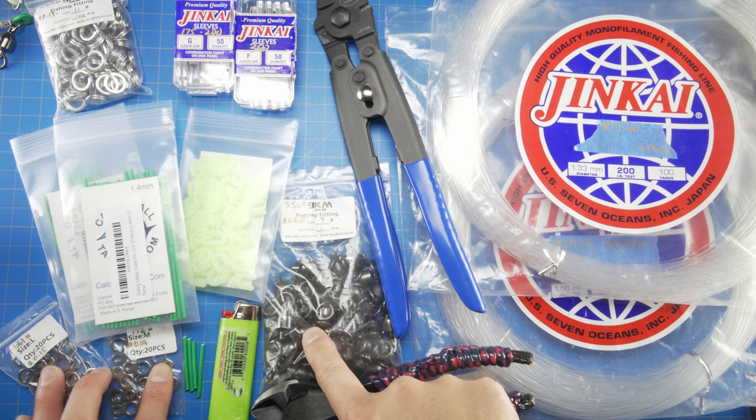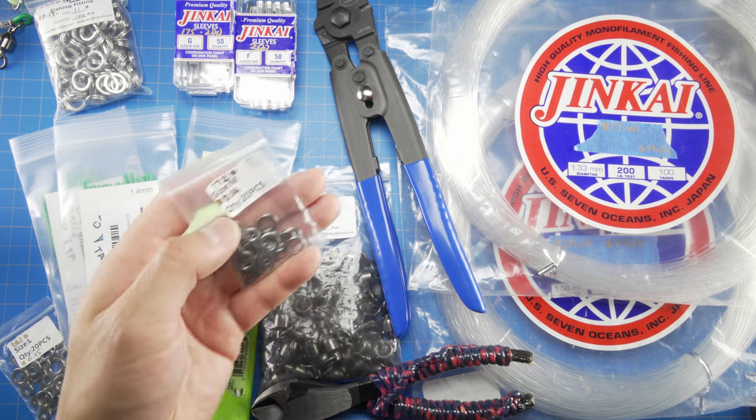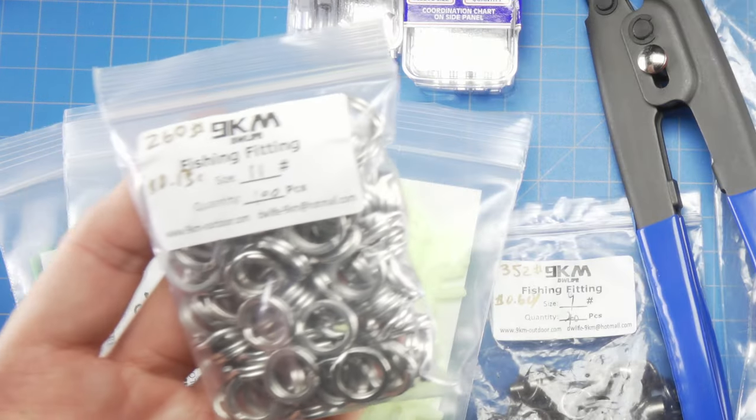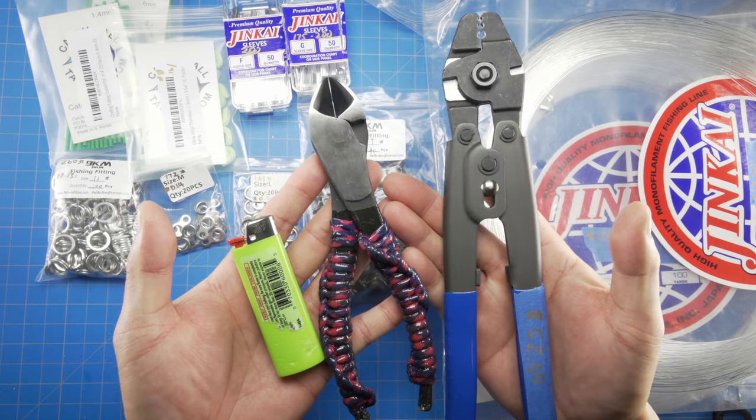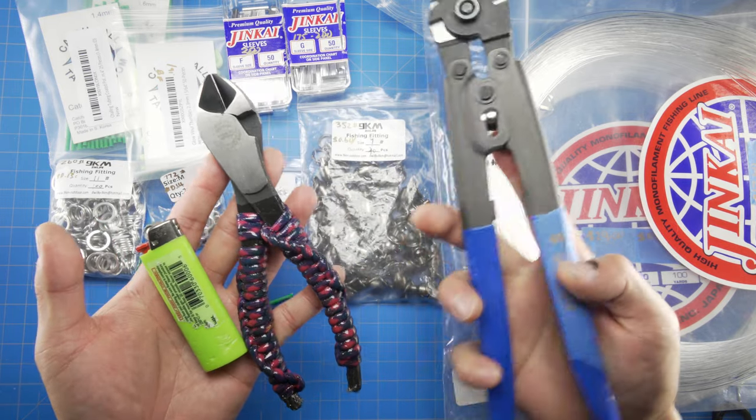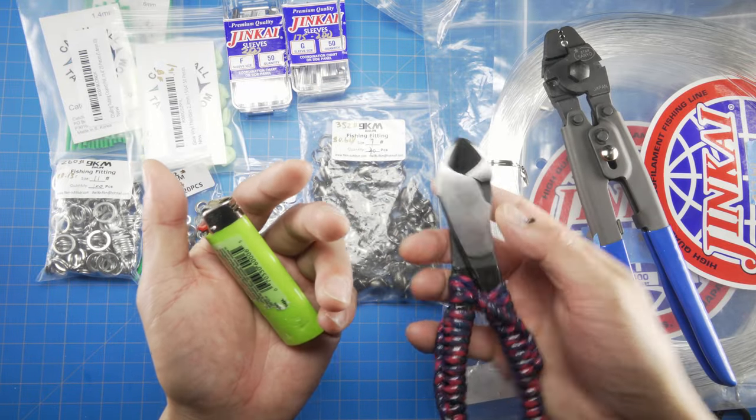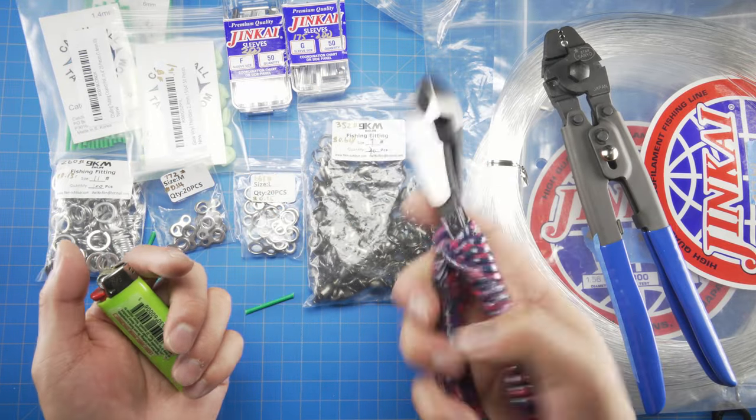These hardware I got, swivels, infinity rings, and split rings are all from China. So the tools we're going to need, this is the most expensive piece that I had to buy here. Here's your cost, $52. A lighter to flare your mushroom ends for the mono, and something to cut it with.